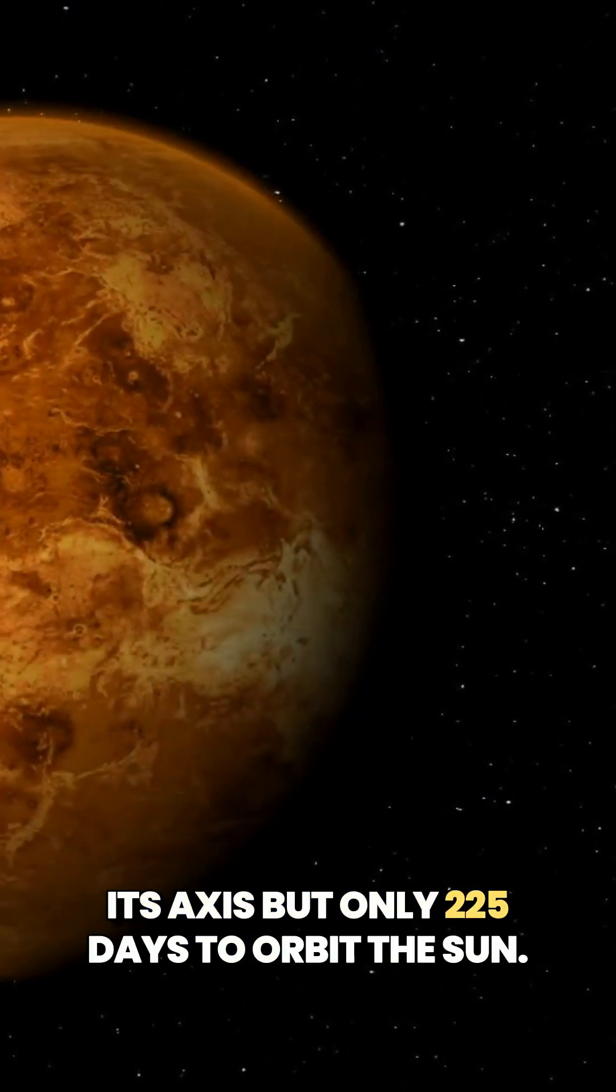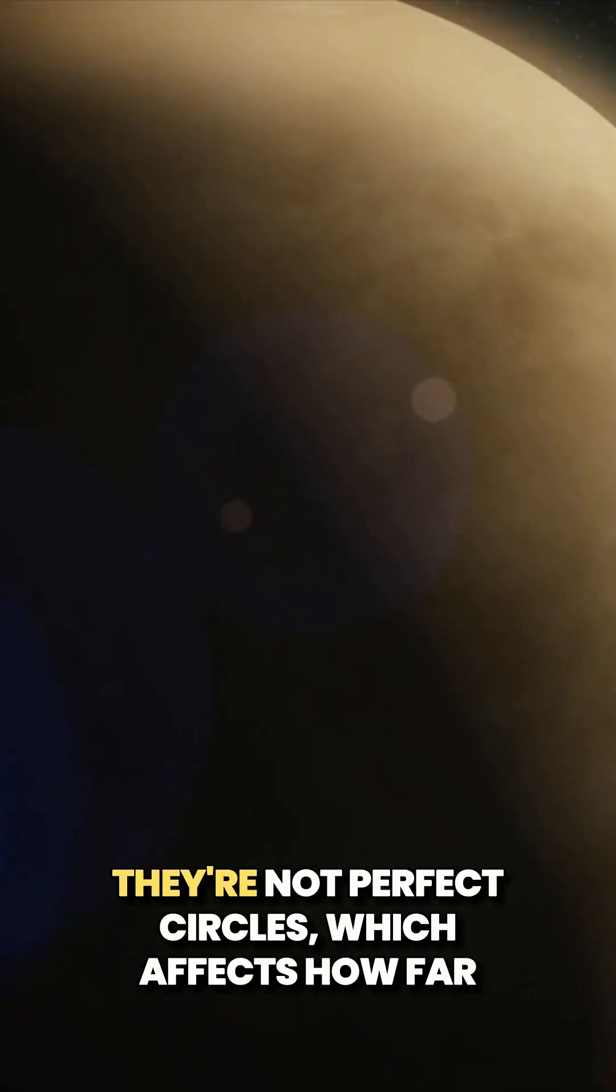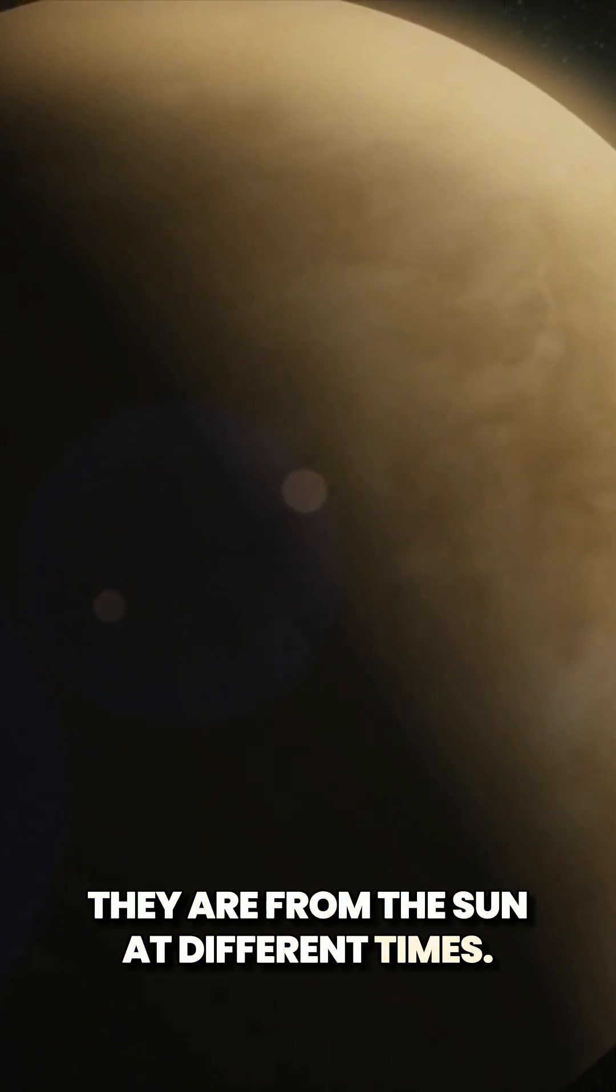The orbits of these planets are elliptical, meaning they're not perfect circles, which affects how far they are from the sun at different times.